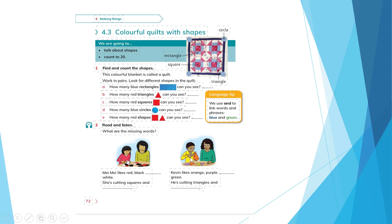Now let's go to Kevin — the boy. Kevin likes orange, purple, and green. He's cutting triangles and rectangles. Kevin likes orange, purple — we write here 'and'. Very good. He's cutting triangles and squares. Very good.